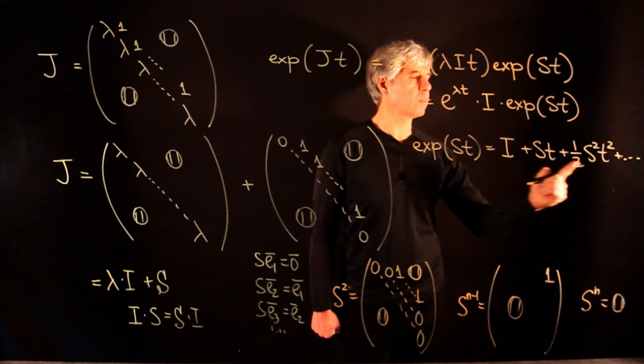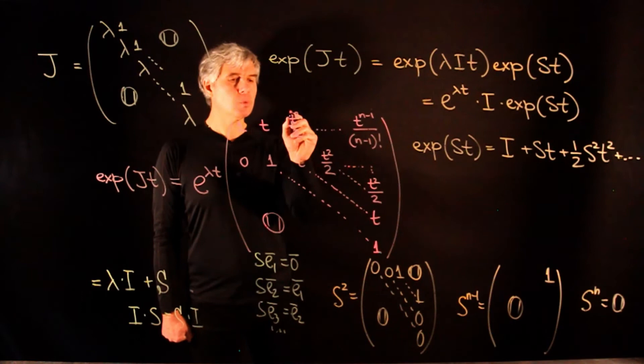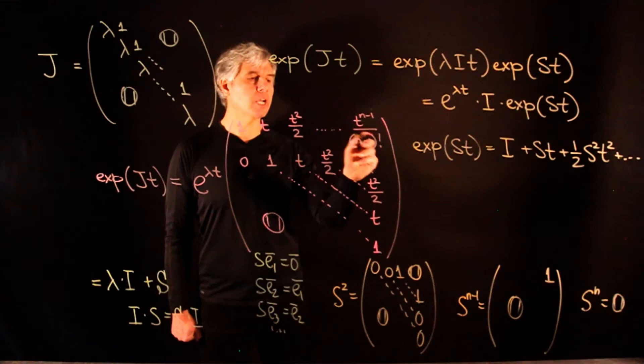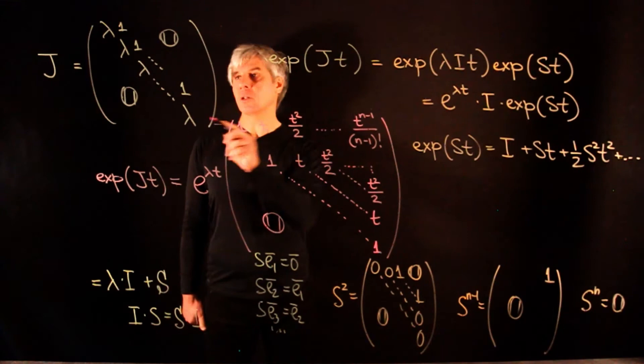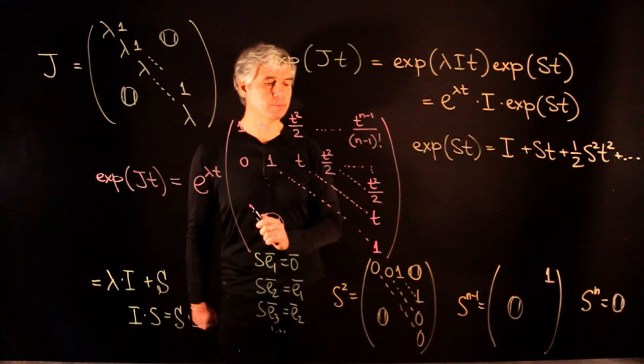To get the exponential of the Jordan block Jt, we multiply this upper triangular matrix by e^(λt), meaning each entry is multiplied by this exponential function. This is the formula for the exponential of a Jordan block.